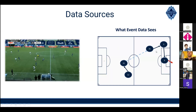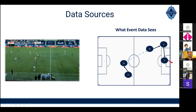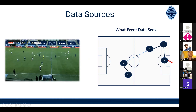Event data records every on-ball action in a match: the XY location of that action, who made it, and what they did with the ball. You can see the pass from player 12 to 31, then 31 driving the ball up the field and passing to the left wing, and so on. What's missing from this data is anything that happened off the ball — defender locations, other players' movements. Out of 22 players on the pitch, we're only seeing a small snapshot.